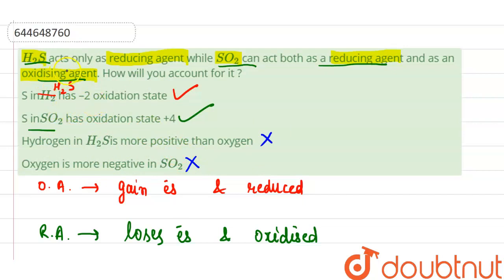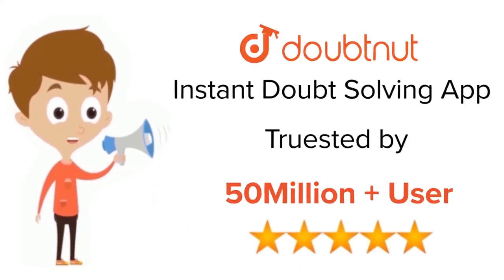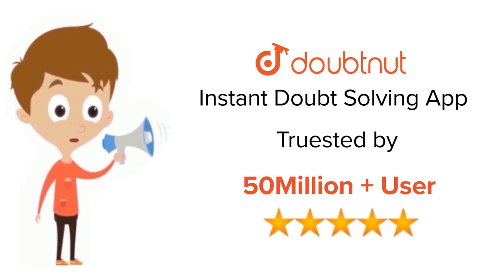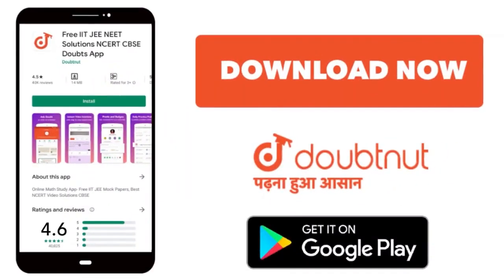Due to these reasons, hydrogen sulfide acts as a reducing agent only, while sulfur dioxide can act as both a reducing and an oxidizing agent. For class 6 to 12, IIT JEE, and NEET level — trusted by more than 5 crore students — download DoubtNet today.